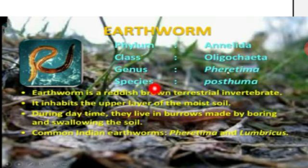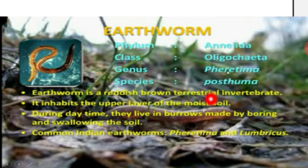Introduction: The earthworm is a reddish-brown terrestrial invertebrate. Terrestrial means it lives on the uppermost moist surface of the soil on land. Invertebrate means it does not have a vertebral column. It is known as the farmer's friend.